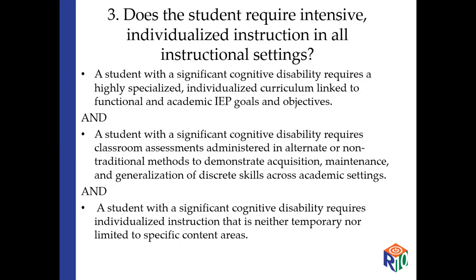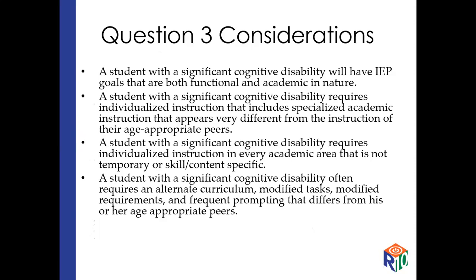Question three: does the student require intensive individualized instruction in all instructional settings? It wouldn't just be that they're okay in math but reading is really bad — that wouldn't be a cognitive disability. They require individualized instruction that is not temporary and not limited to a certain content area. It requires alternate or non-traditional methods for the student to show and maintain what they've learned. IEP goals will be both functional and academic, and this type of student will appear very different instructionally than age-appropriate peers. They require an actual alternate curriculum, which is bigger than just modified curriculum, and they receive frequent prompting that differs from their age-appropriate peers.